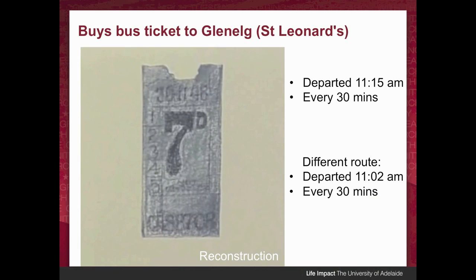If he had waited a little longer he could have picked up a different bus from the same stop, departing every 30 minutes from 11:02 onwards. That different bus would have got him closer to the spot where he was found dead. But he didn't take that — he took a bus that dropped him off a slightly more than 20-minute walk from where he was found dead. Was it that he was simply new to the area and didn't know which bus to take, or did he have other business at the earlier destination? We don't know.